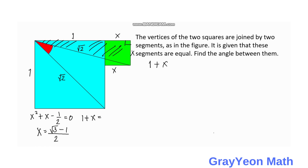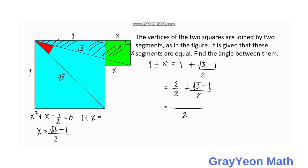Next, we get the value of one plus x. So one plus x is actually equal to one minus the square root of three, minus one over two. And one can be written as two over two. So getting the same denominator, we can say that we have square root of three plus two minus one, which becomes square root of three plus one over two.